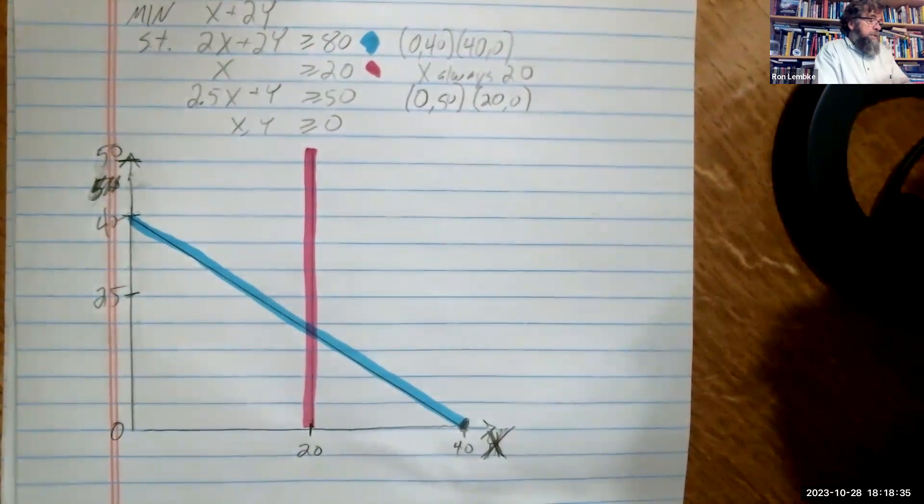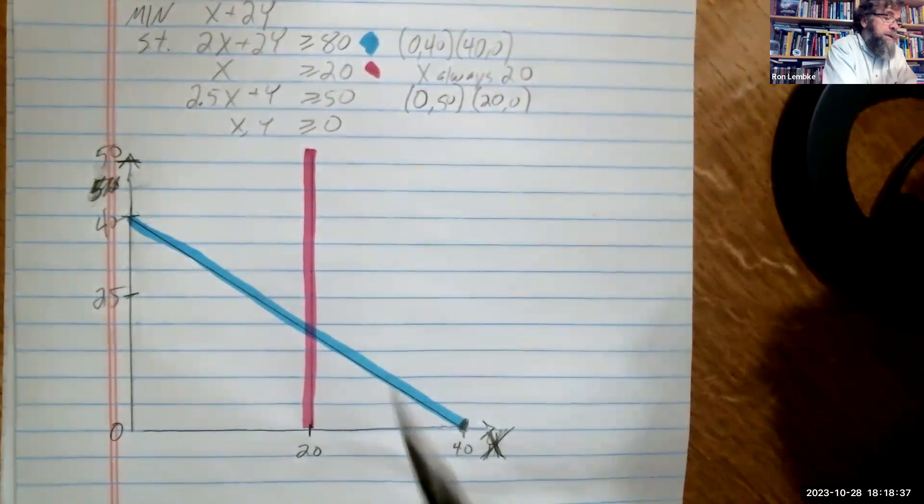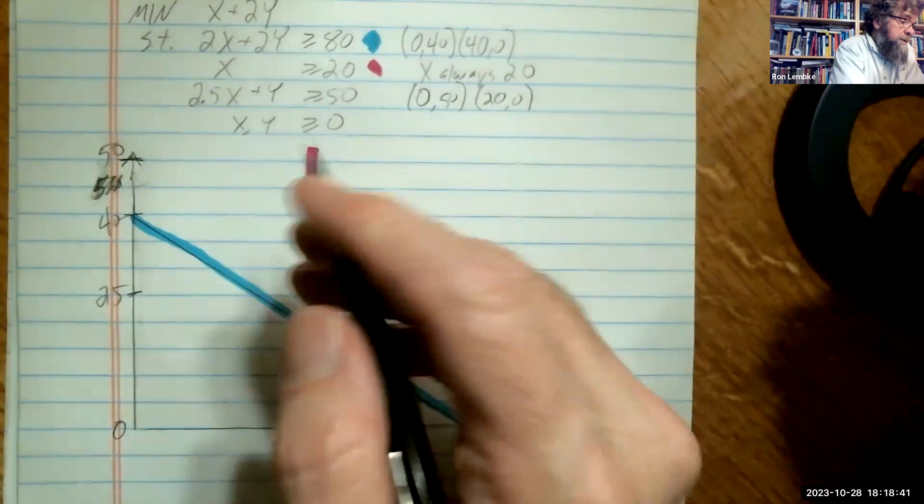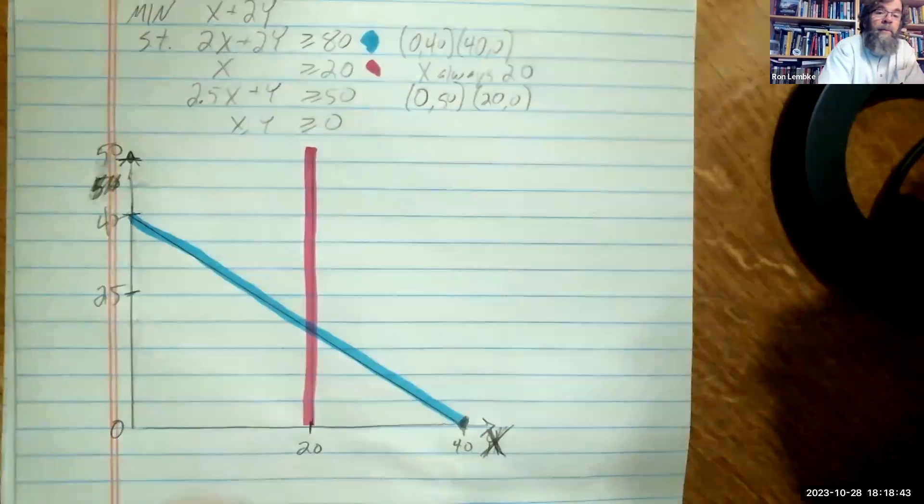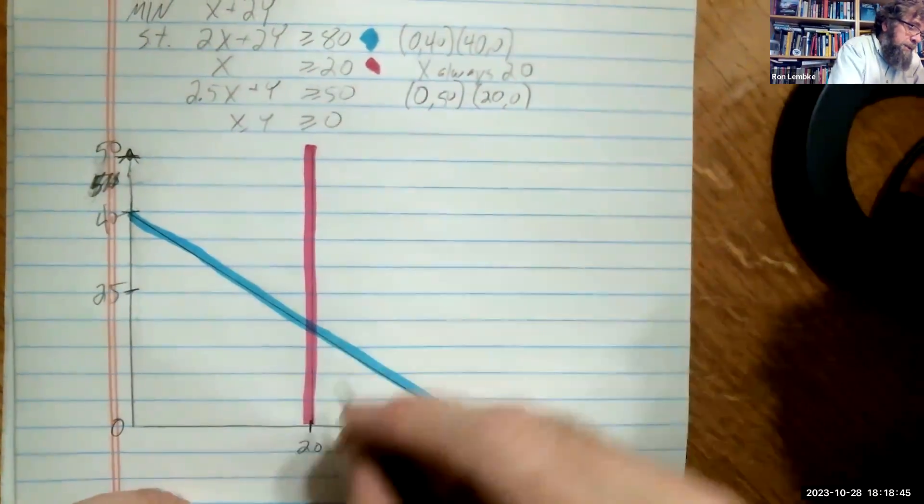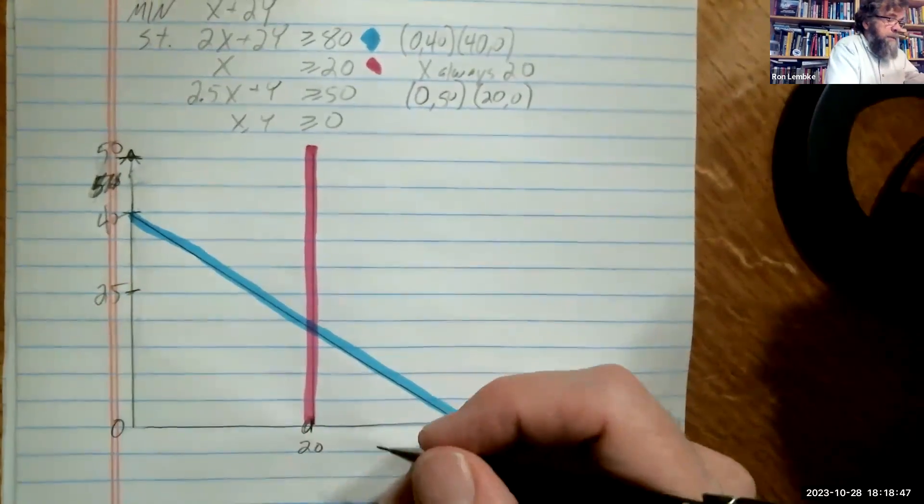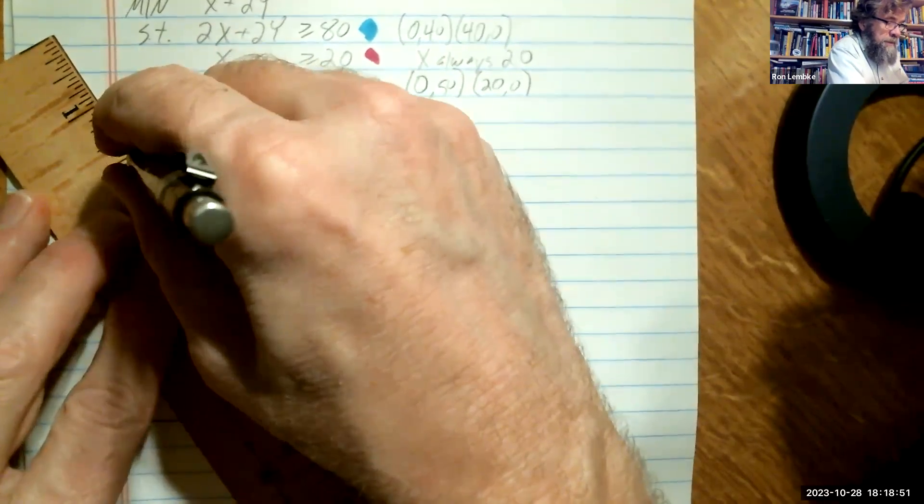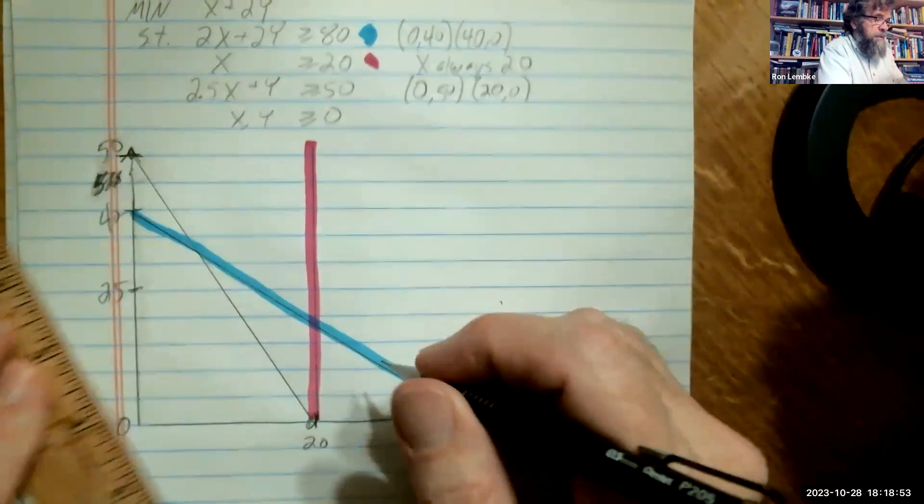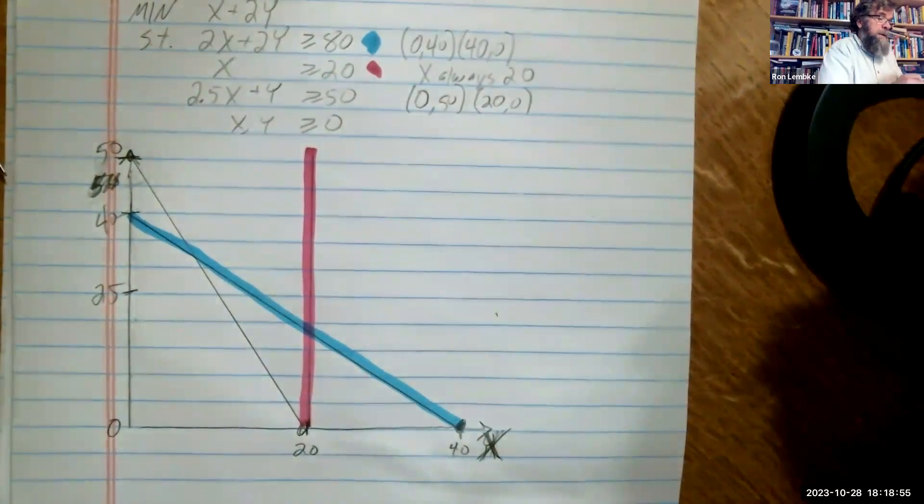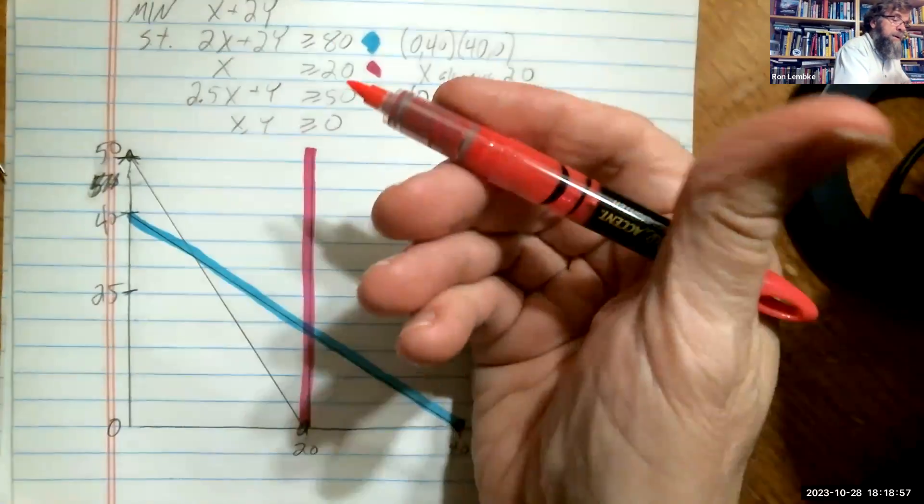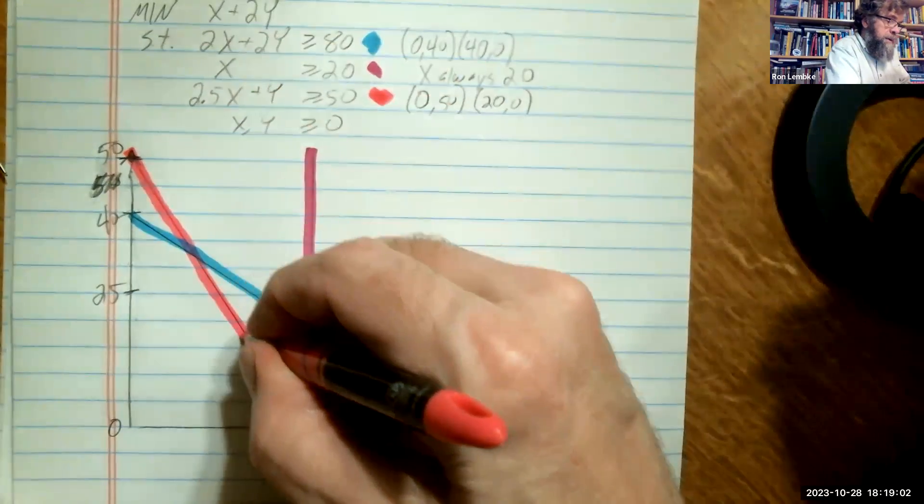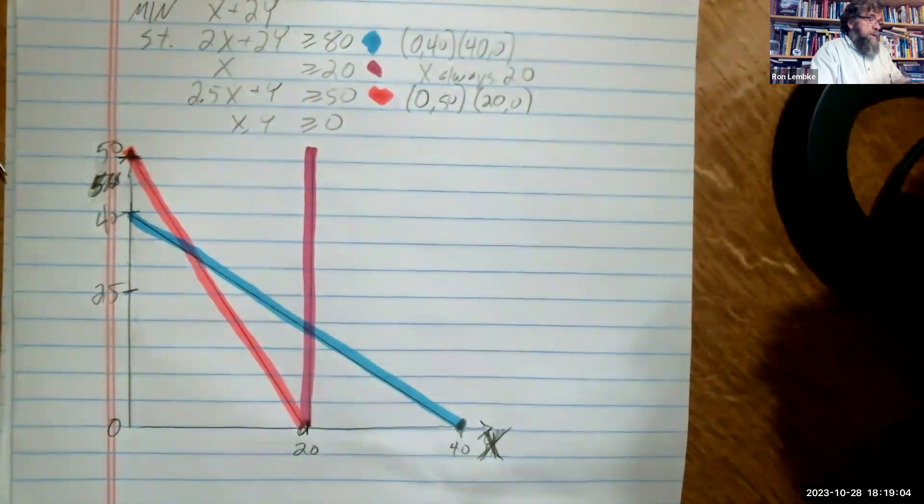And then our last one is 2.5x plus y greater than or equal to 50. So we have 0, 50, which is up here, and then 20, 0, which is down there. So we need to connect those with a straight line. And then we'll go with pink.